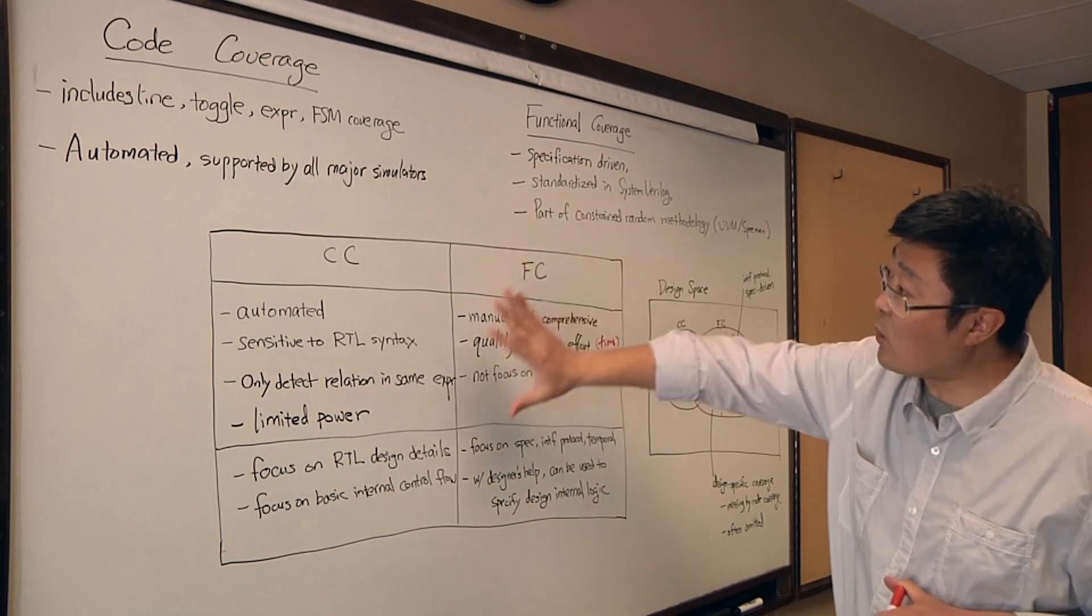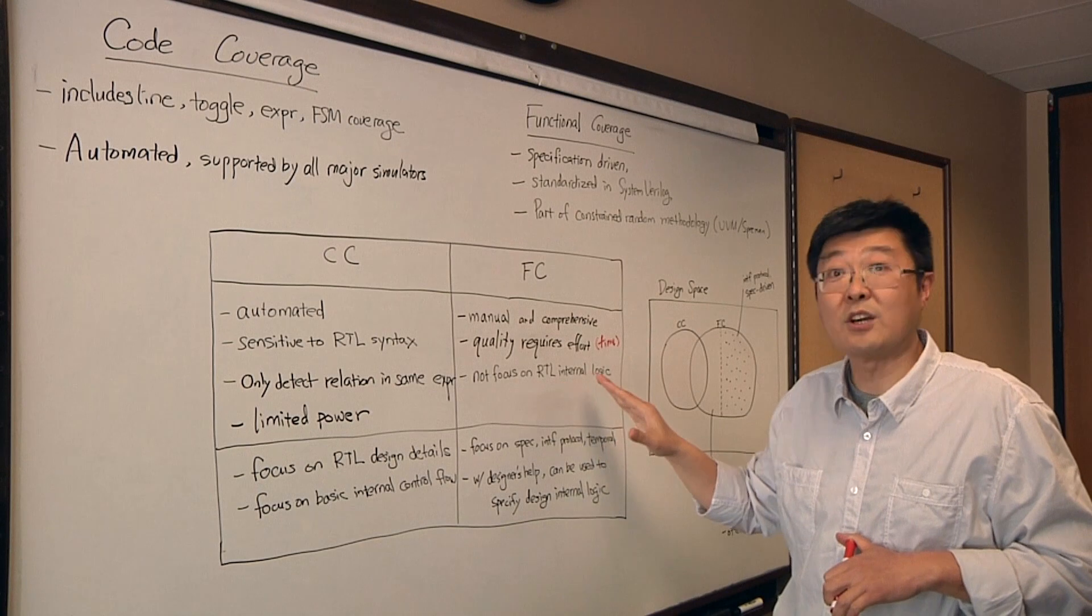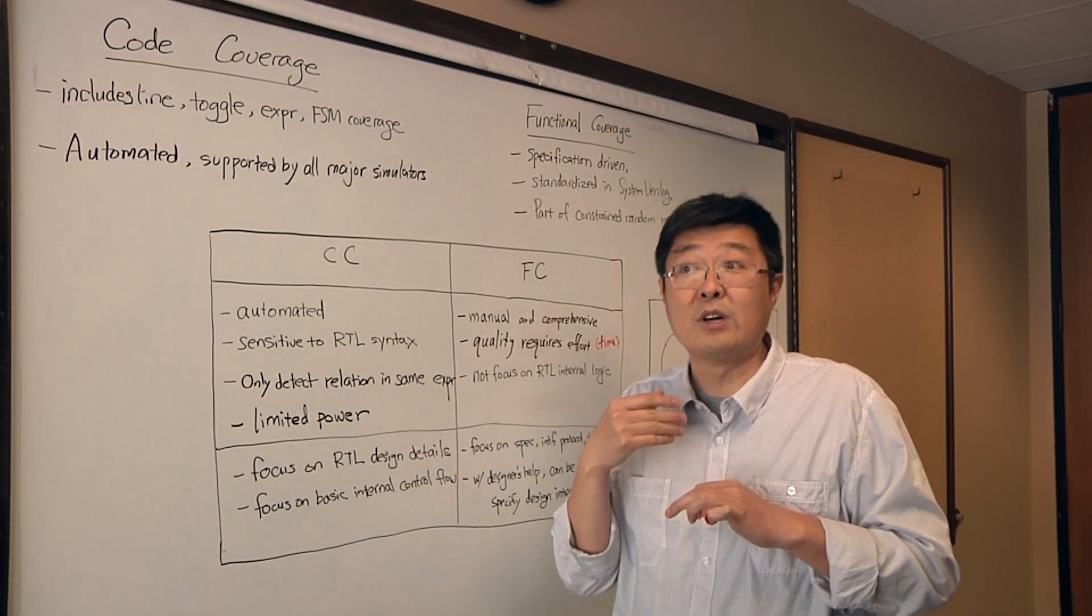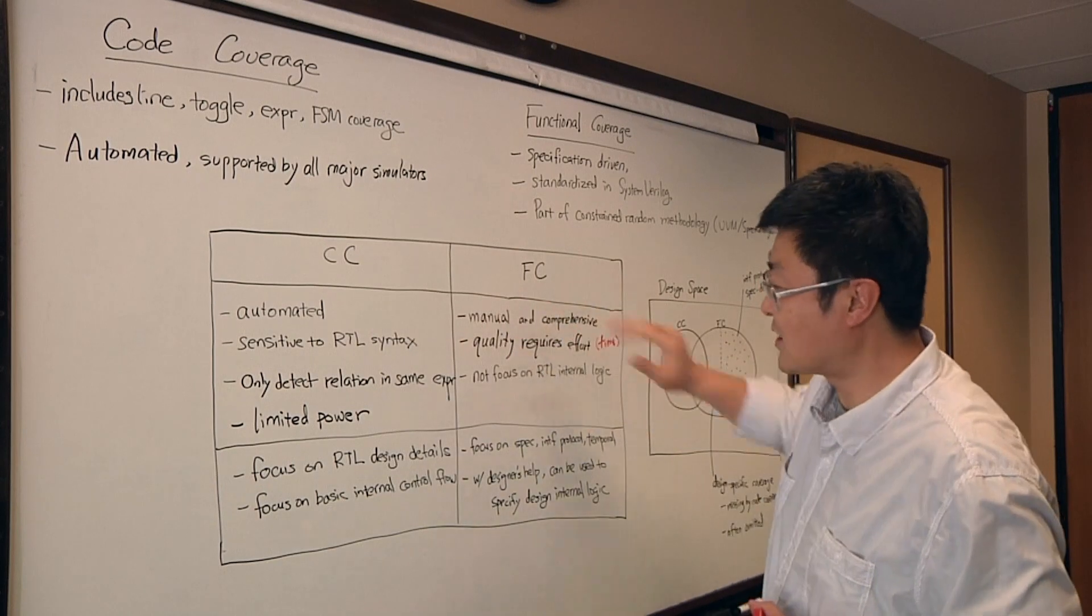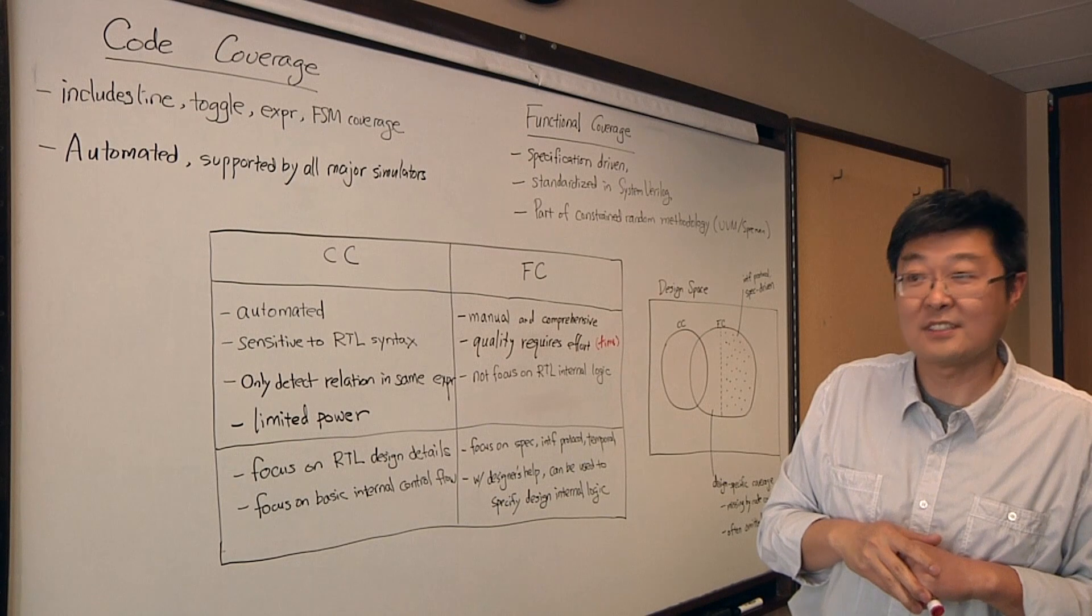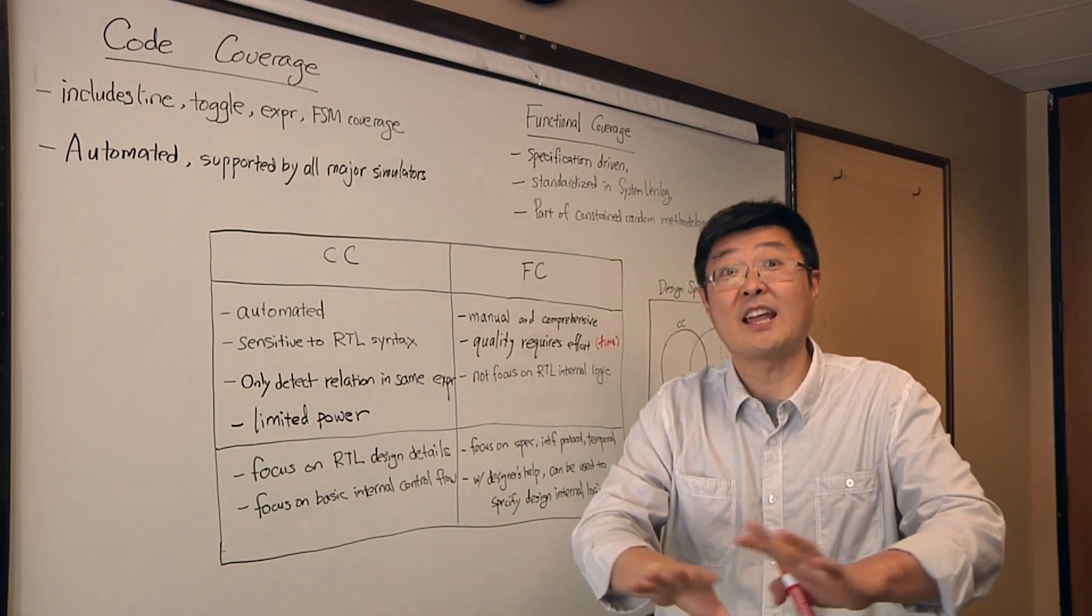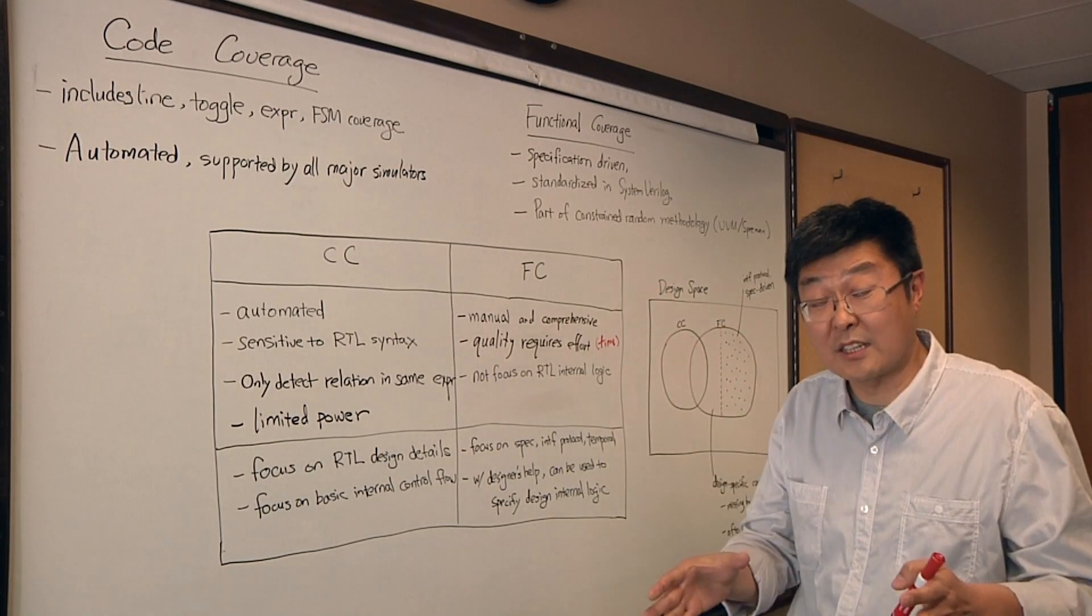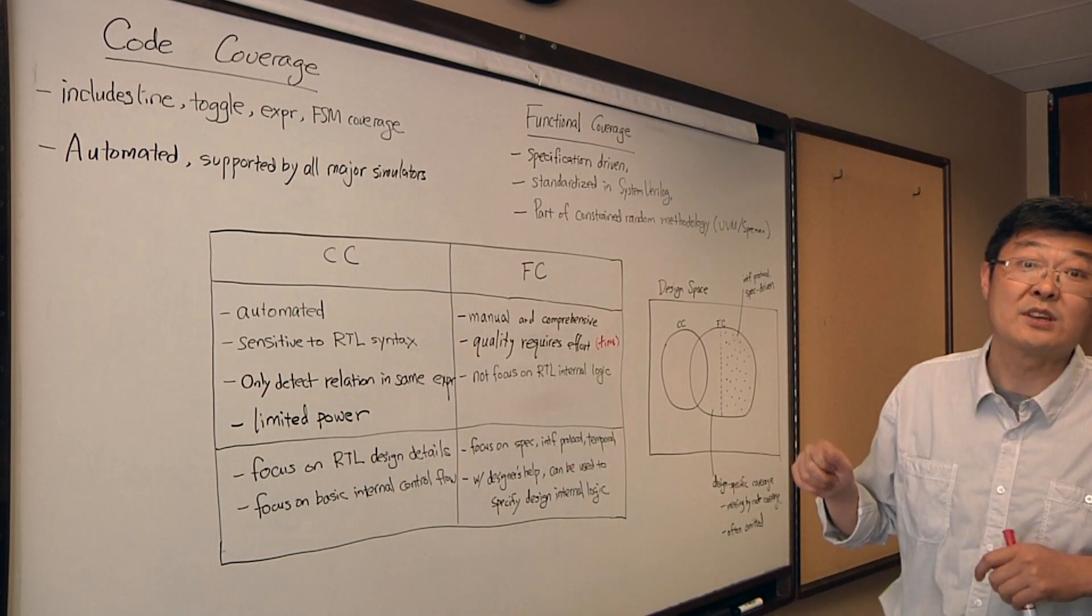Compared with code coverage, functional coverage typically does not focus on RTL internal logic. That's common practice. It doesn't mean you cannot do it; people just don't do that often. If you compare code coverage and functional coverage, code coverage focuses on RTL design details and the basic control flows inside the RTL, based on lines and signals. Functional coverage focuses on spec specifications, interface protocols, and temporal behaviors of your protocol.